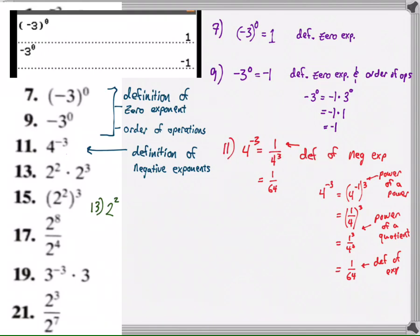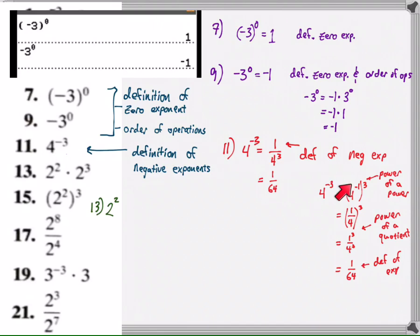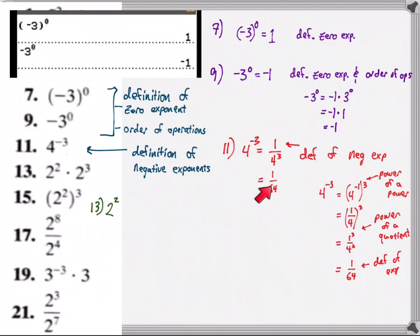Then I could apply power of a quotient and end up with 1 over 64. For anything after number 10, you should be showing your work in two different ways. There should be the shorthand approach — the quickest possible way to get there — and then tell me what property you used. Then I'd like you to pick it apart and show me you can get to that result using a different set of rules, using a series of other properties and definitions.